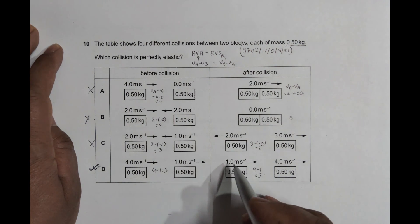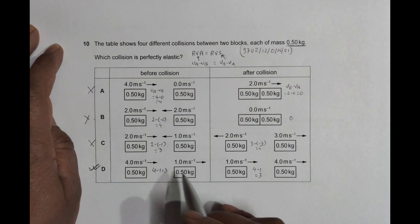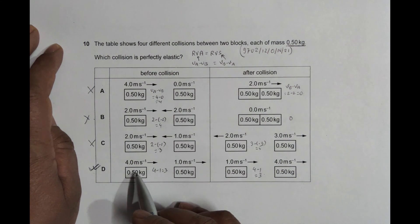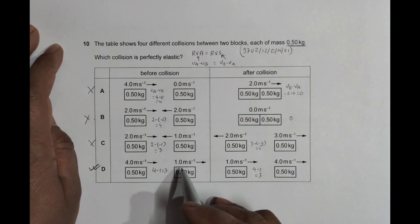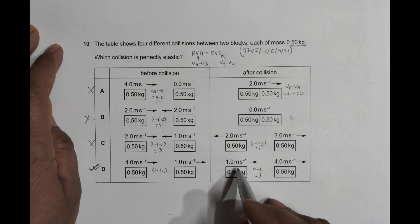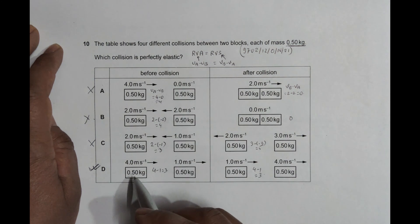Initially A was 4 meters per second, later B was 4 meters per second. Initially B was 1 meter per second, later A was 1 meter per second. So this exchange confirms we have an elastic collision. So choice number D is the correct choice.